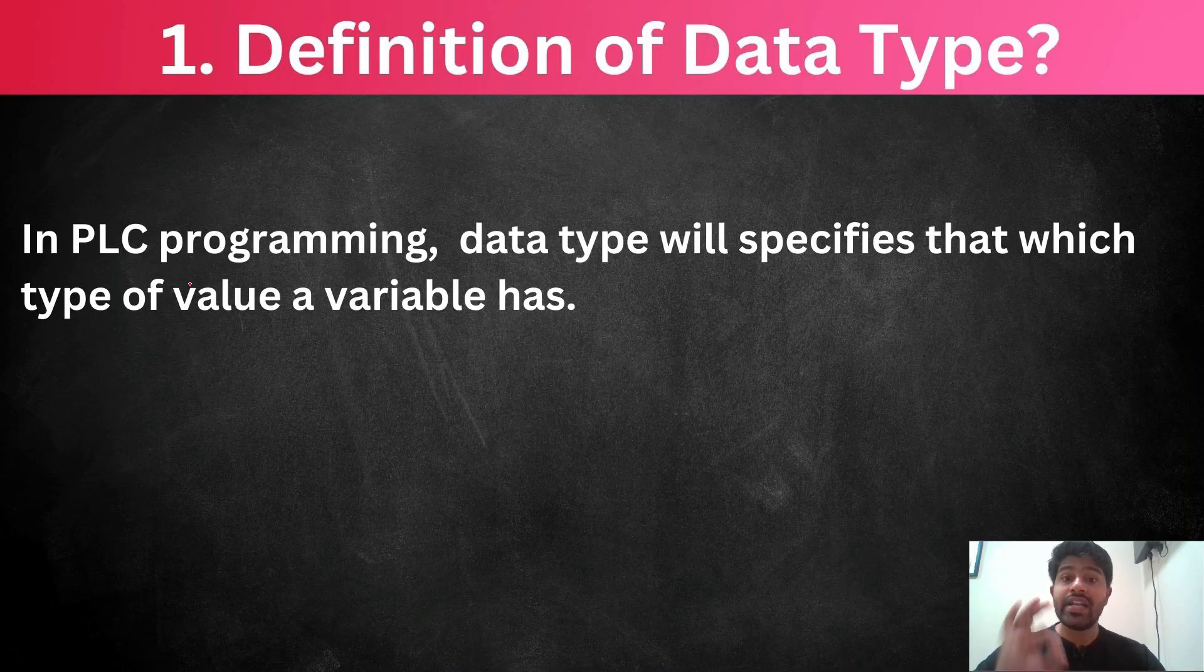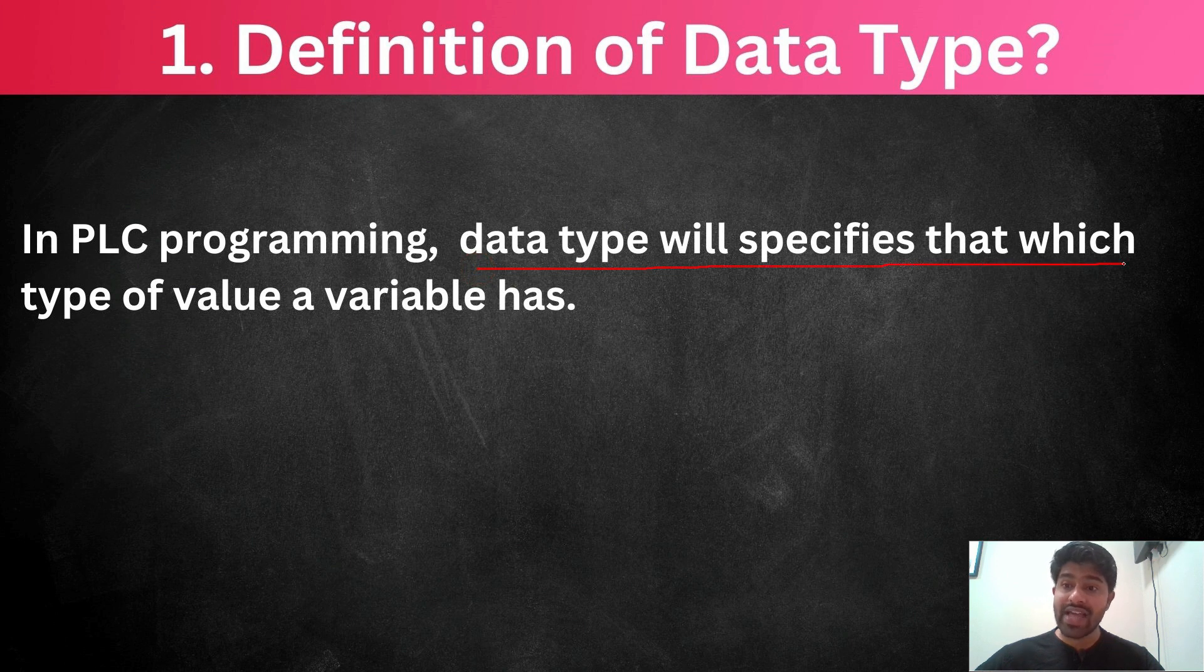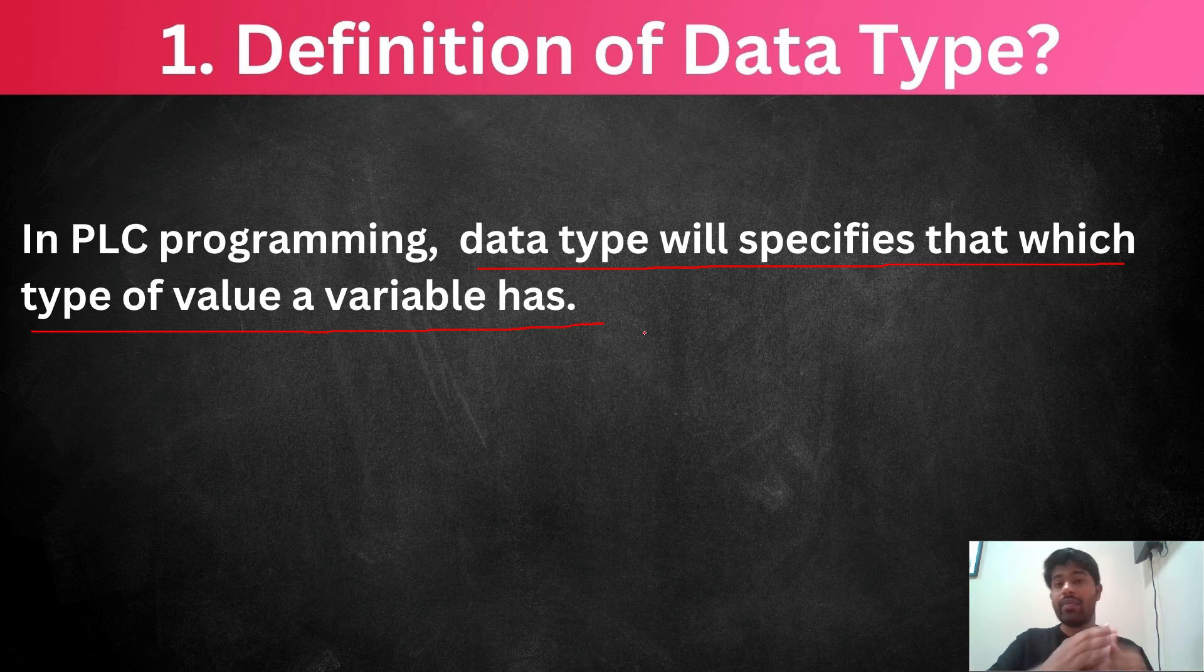First, we will check the definition of data type. In the PLC programming, data type will specify which type of value a variable has. It means that one value there, it is coming from any instrument or transmitter. So, what is the type of value that variable has, it will show. That is very clear.